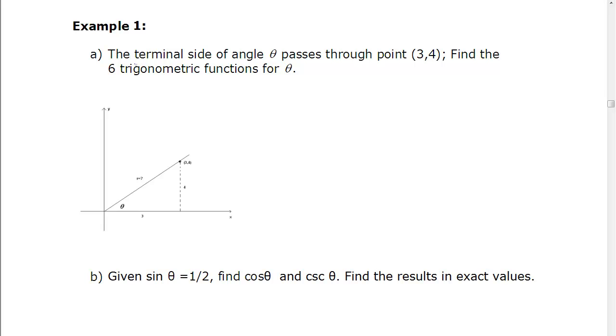So in our first example, we have the terminal side of an angle θ passes through the point (3,4). So we have a sketch down here. And we want to find all six trigonometric functions for θ. So we can see the point here is (3,4). And that tells us that x is 3, so the x part down here was 3. And the perpendicular part, so we drop a perpendicular, which means we get a right angle, is 4.